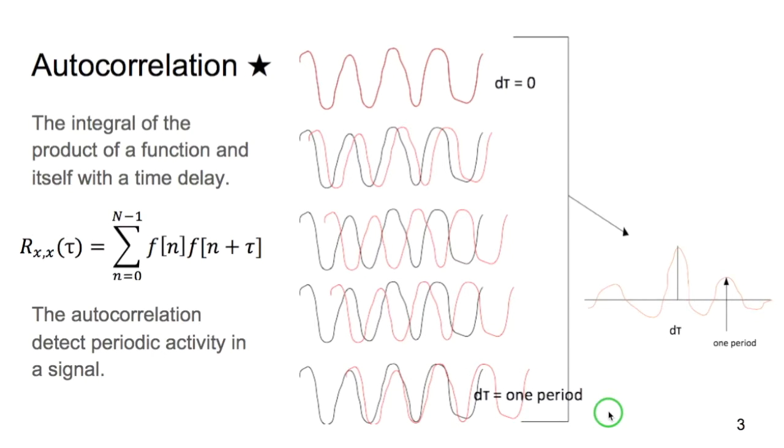And so the autocorrelation, because of this behavior, is most often used to detect periodic activity within a signal.